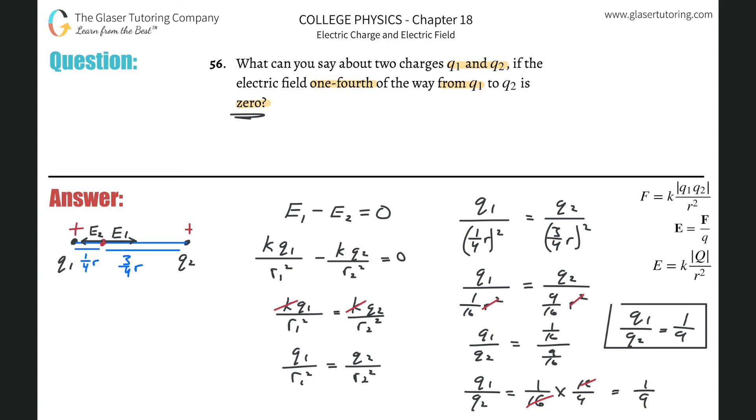So if this particular point is going to lie one fourth of the way from Q1, then I know that Q1 can be equal to some value, we'll call it X, and then Q2 has to be equal to nine times that same value.